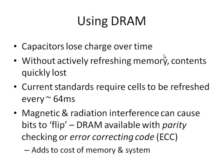It's also possible that magnetic and radiation interference can cause a bit to flip randomly. More expensive DRAM is available that uses parity checking or error correcting code. These modules cost a little more because of the extra circuitry, and you can generally buy memory modules with or without error correcting code — modules with ECC will normally cost a bit more.